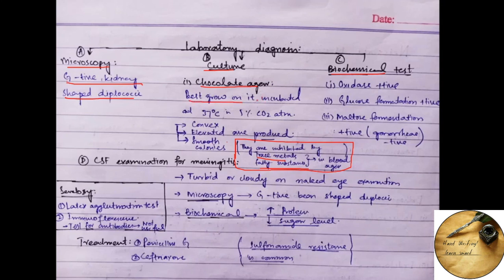When incubated at 37 degrees centigrade and 5% carbon dioxide, they show convex, elevated and smooth colonies. You can prepare the chocolate agar from blood agar by heating the blood agar at about 80 degrees centigrade.